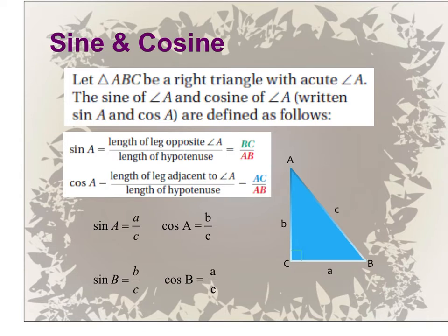The ratio of the side lengths: when we do sine, we're going to do the length of the leg opposite over the length of the hypotenuse. When we do cosine, we're going to use the length of the leg adjacent over the length of the hypotenuse. Notice we have to switch the names of the sides based on the acute angle they're asking us to use.